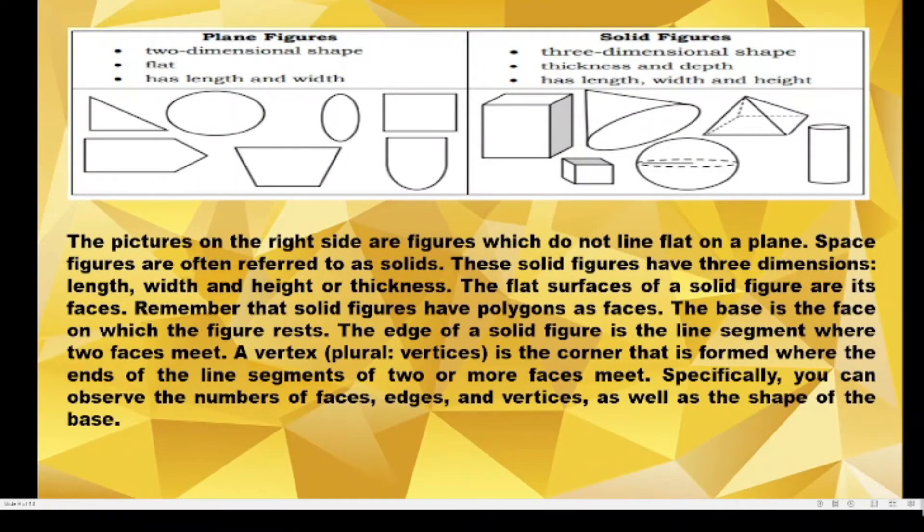The pictures on the right side are figures which do not lie flat on a plane. Space figures are referred to as solids. These solid figures have three dimensions: length, width, and height or thickness.